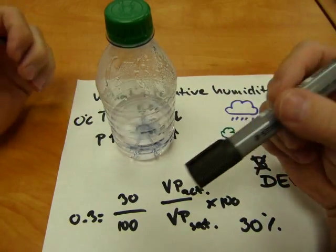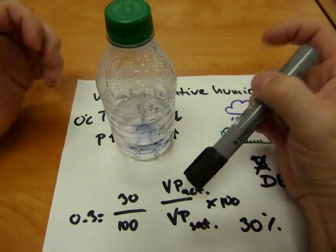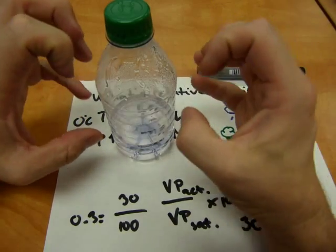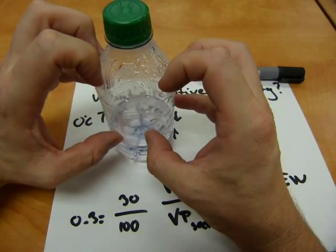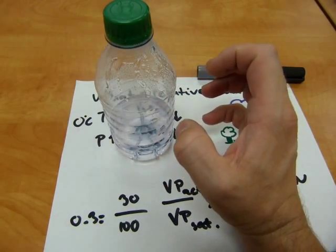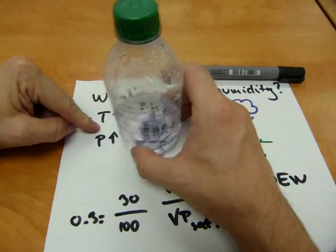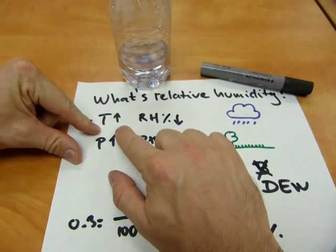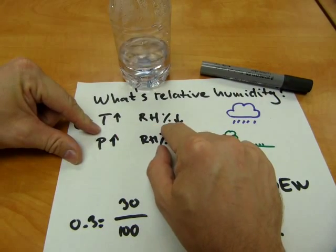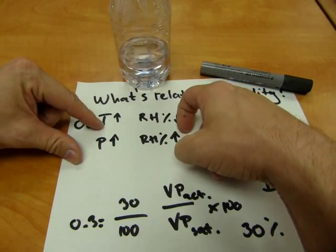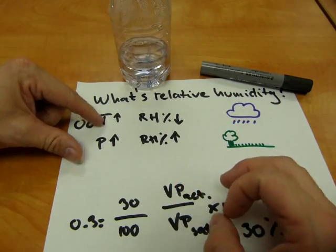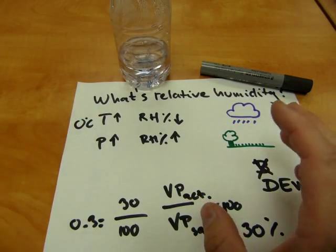Now, because this water vapor is in a gas, in this case air, with gases everything is temperature and pressure related, like I said, and if the temperature goes up, oh, I wrote it here, if the temperature goes up, the relative humidity percentage drops down, that's because this is a fraction, and that's how fractions behave.